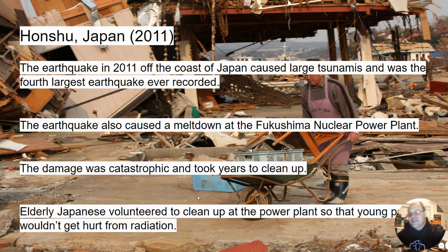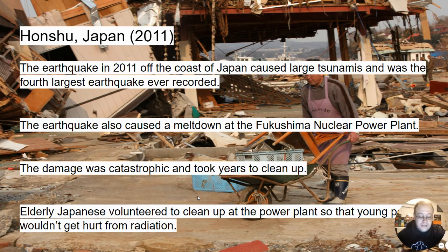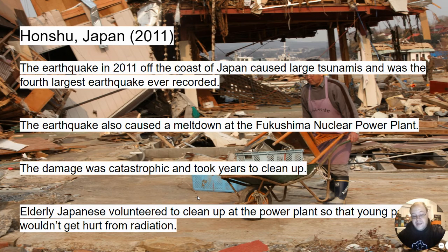The Japanese earthquake in 2011 was off the coast of Japan, part of the Ring of Fire, and it caused a huge tsunami. It was the fourth largest earthquake ever recorded and caused a meltdown at the Fukushima nuclear power plant, leaking nuclear waste into the ocean. The damage was catastrophic and cleanup is still ongoing, with radioactive fallout remaining in the area. A notable bright spot: elderly Japanese volunteers, aged 80 and 90, offered to clean up the power plant so that young people wouldn't be exposed to the radiation — which is both sad and heartwarming.